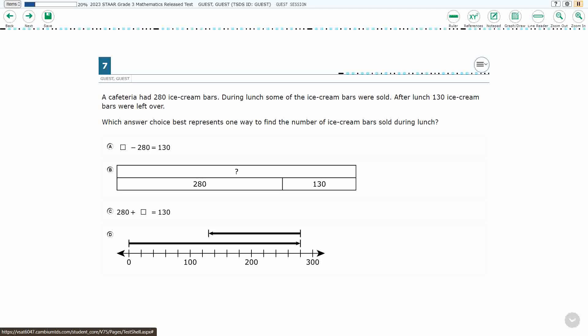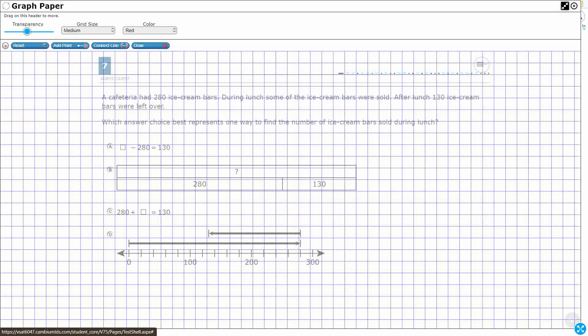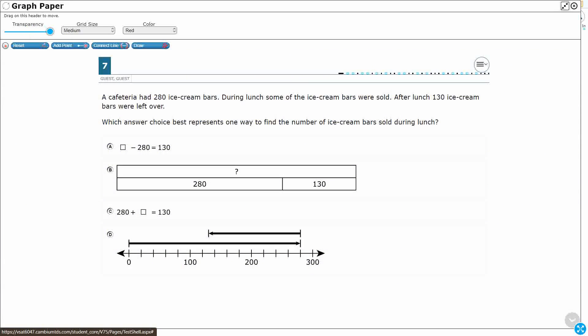So we had a cafeteria with 280 ice cream bars. During lunch, some were sold. We have a missing quantity here. I'm going to put a question mark right here. After lunch, we had 130 bars left over. We need to represent one way to find the number of ice cream bars sold during lunch. Let's just figure that out on our own.